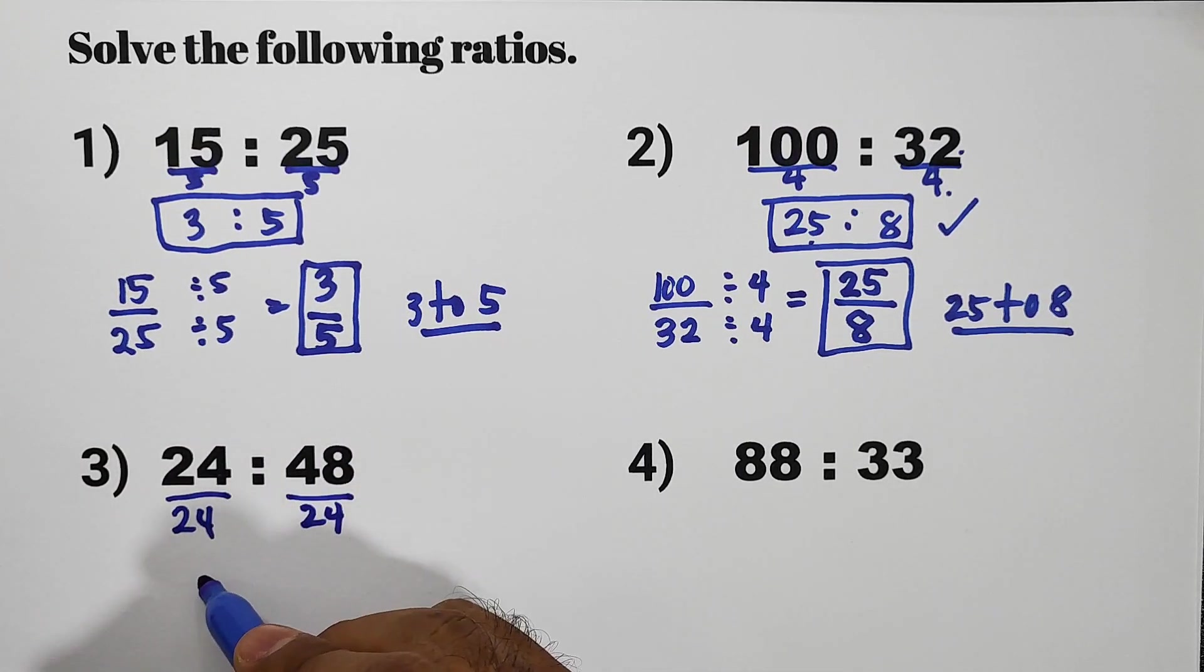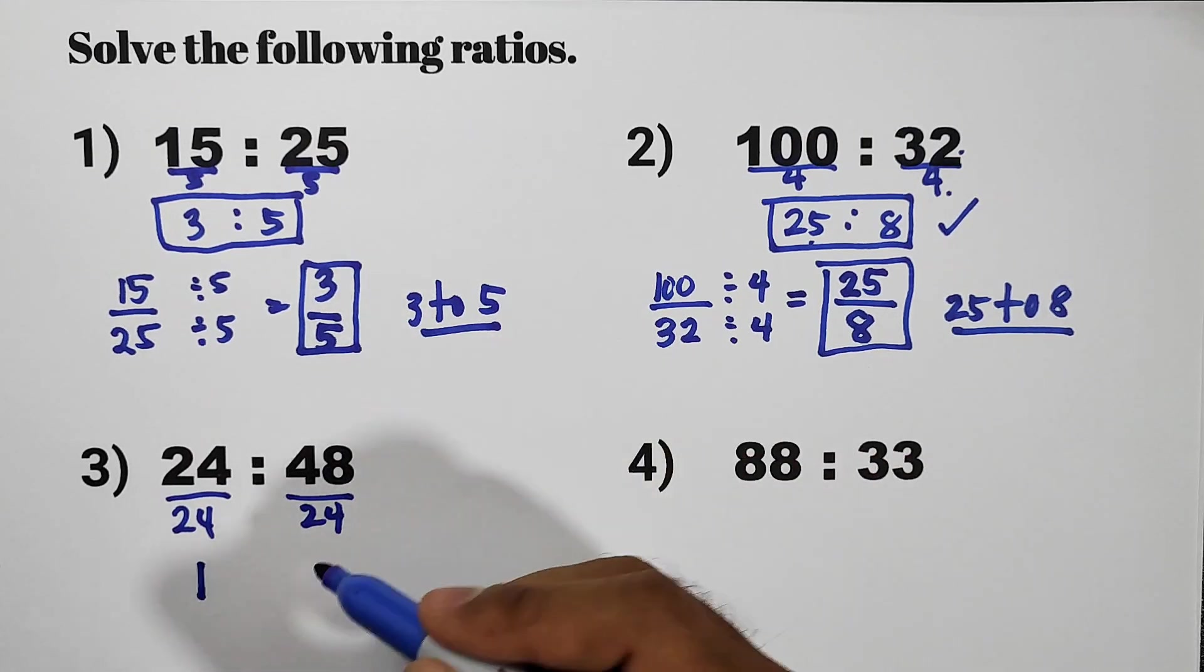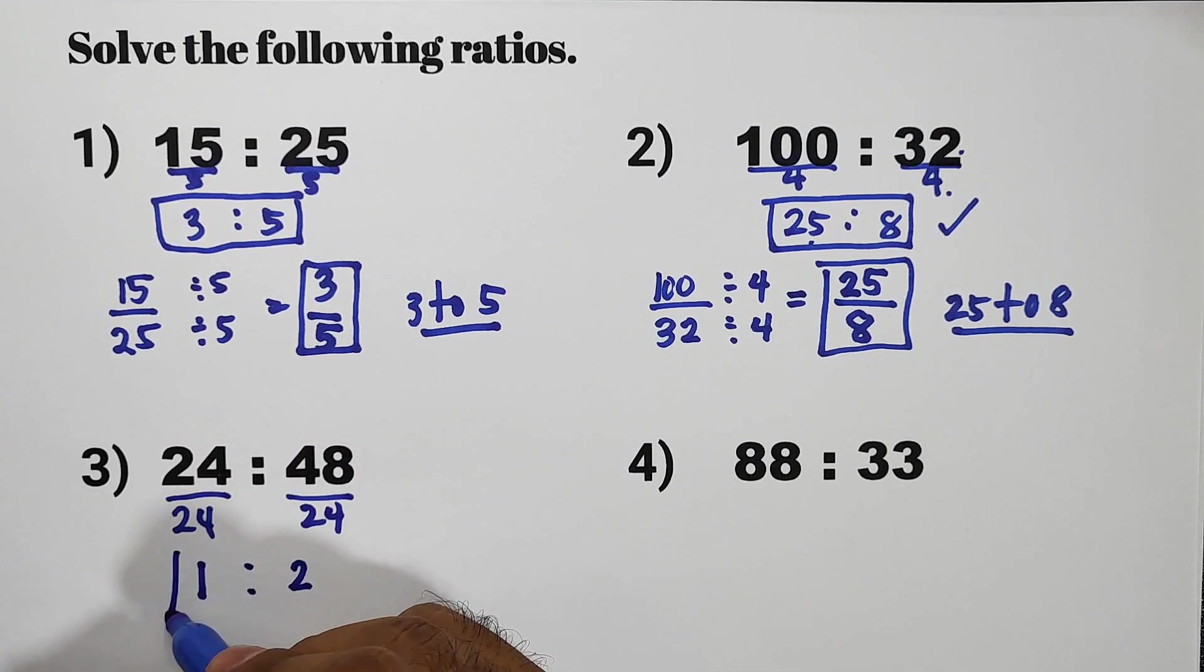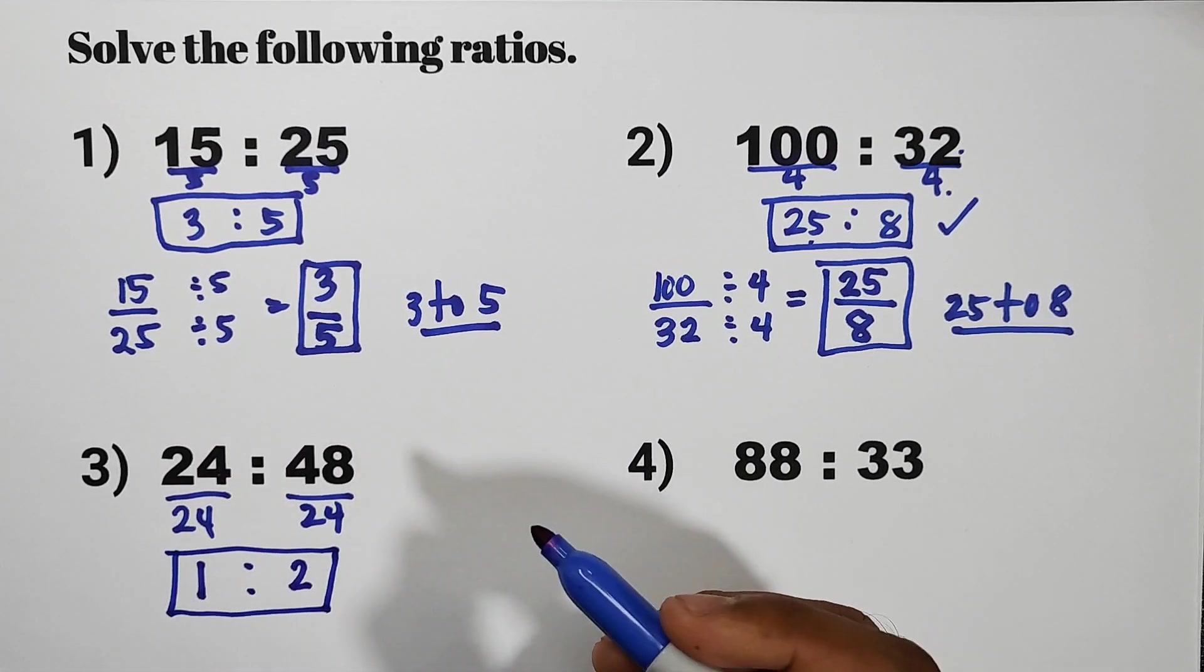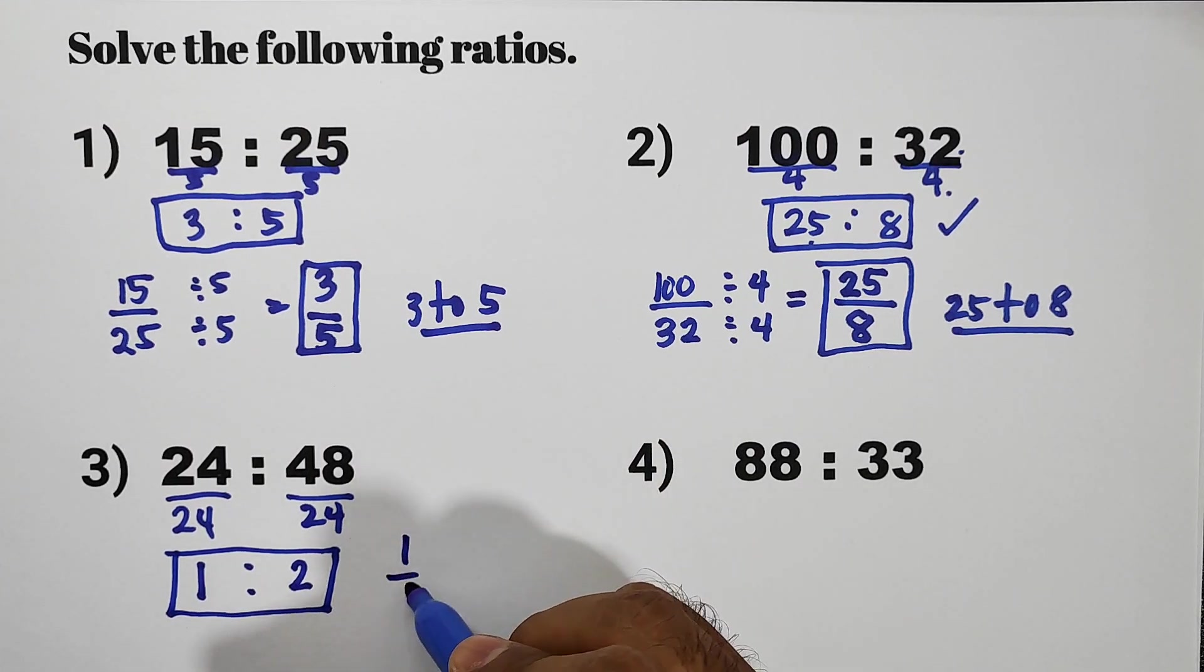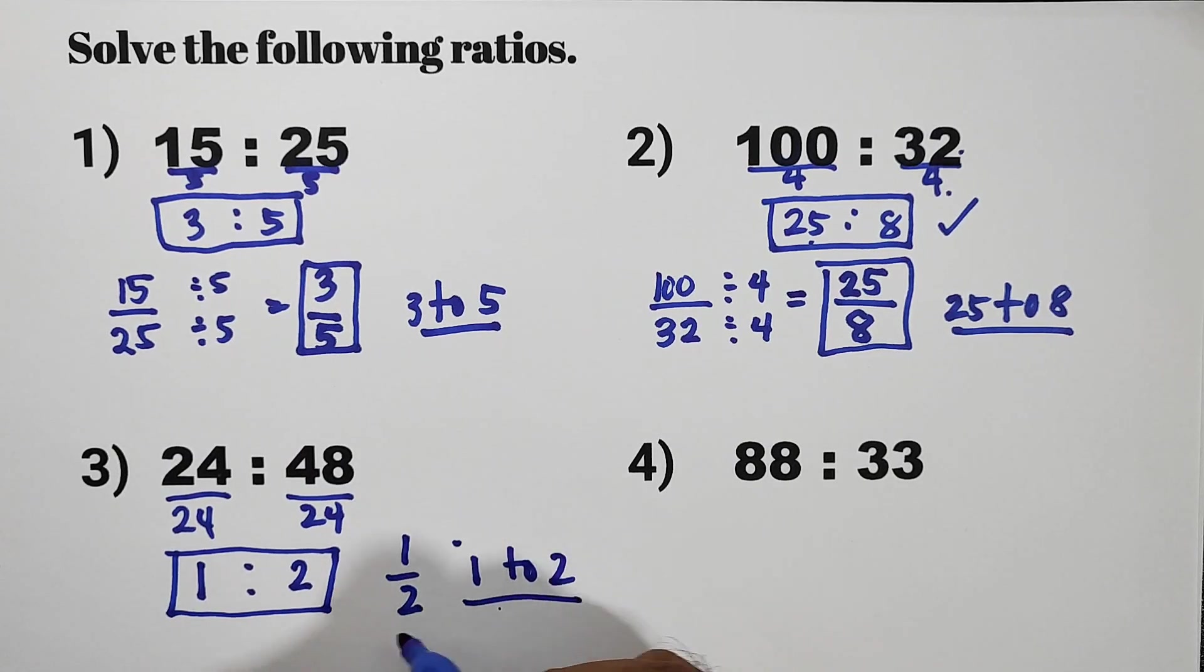So divide both sides, which is 24 and 48 by 24. So the greatest common factor of 24 and 48 is 24. 24 divided by 24, that is 1. 48 divided by 24, that is 2. So our simplest form of the ratio is 1 is to 2. We can write it also as 1 over 2 or 1 to 2.